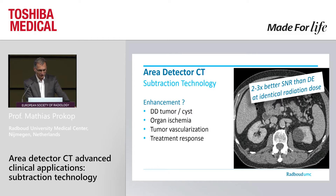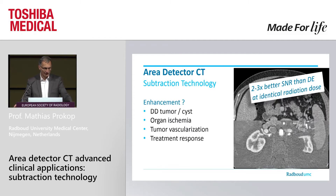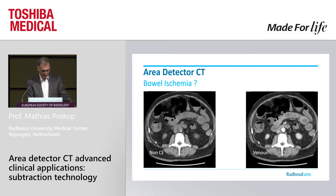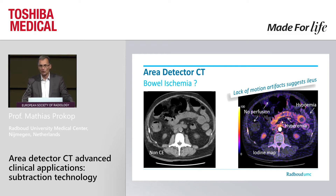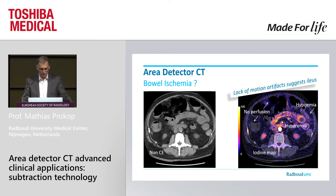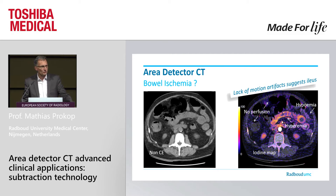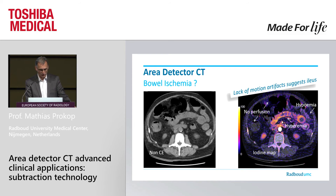Two to three times better signal-to-noise ratio than dual energy at identical cost, with the same indications: differentiation, tumor assessment, organ ischemia, tumor vascularization, or treatment response to anti-angiogenic treatment. Here's an example of bowel ischemia — non-contrast CT and a venous phase CT. We see some hyper-enhancement but we're not so sure about enhancement of the colonic wall. If we look at the subtracted image, we see hypoemia in the left lower quadrant, hypoemia in the proximal small bowel, and no perfusion in the colon. Despite normally having motion artifacts in such patients, we get very good subtraction images — the absence of bowel motion is itself an indicator of ileus, so we can answer two questions at the same time.